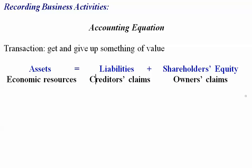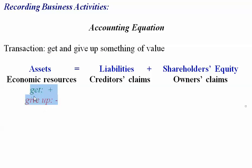As far as the accounting equation goes, we're going to record what we get and what we give up, and I'm going to show you that when you record these transactions, we're going to be able to keep it in balance. When you get an asset, the asset will increase — that makes sense; if you get cash, it'll go up. When you give up an asset, it makes it go down.